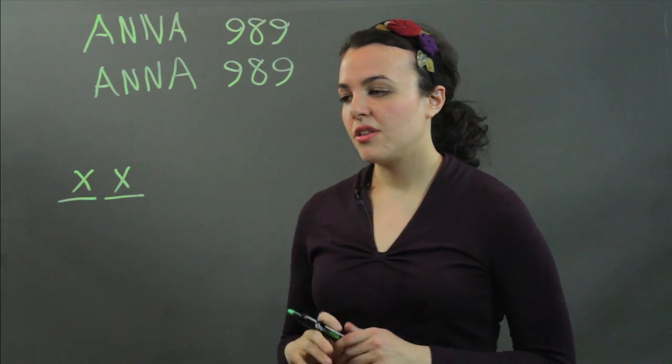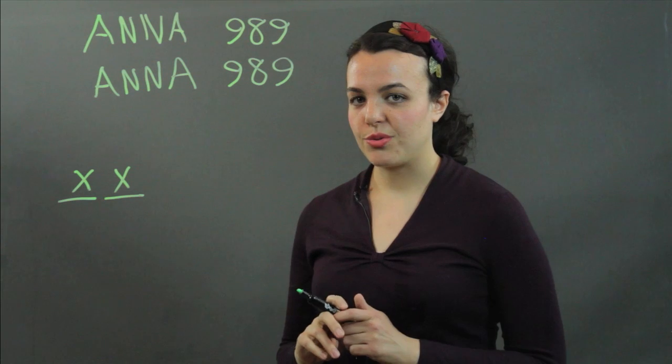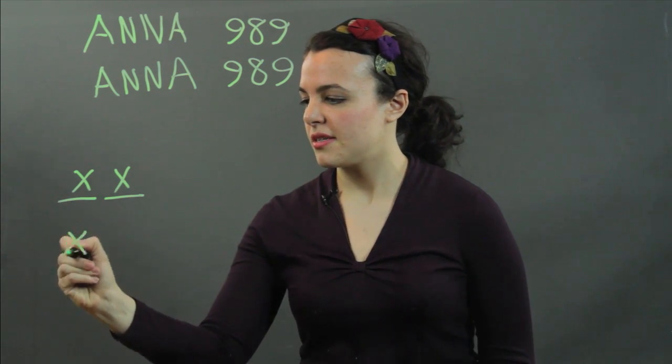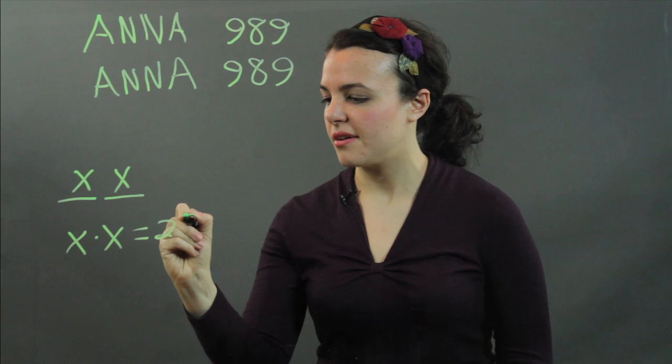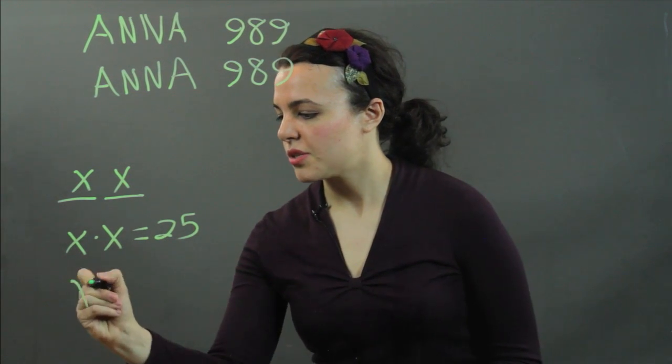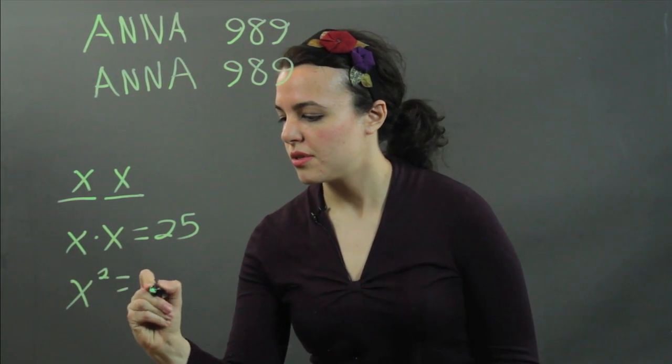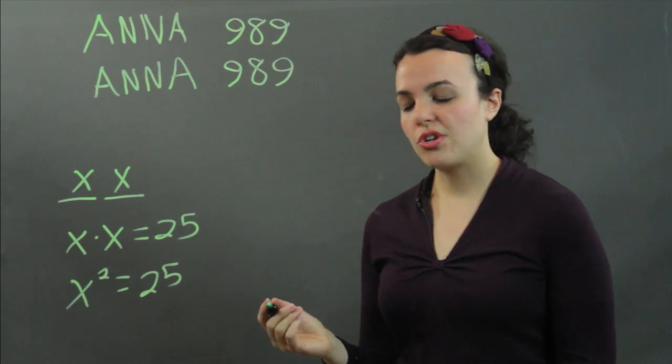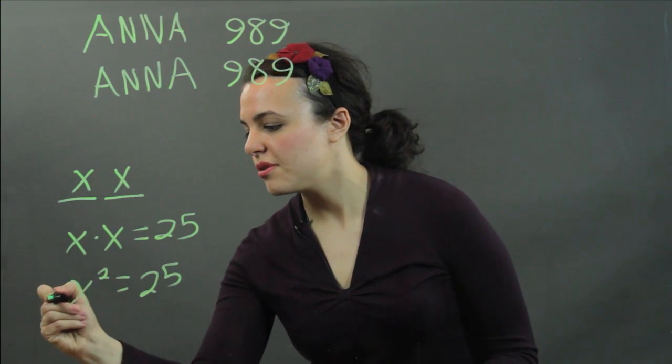Now, as I said, the product of each digit equals 25. So that means that x times x equals 25. Or, x squared equals 25. And you can solve for x by taking the square root of both sides.